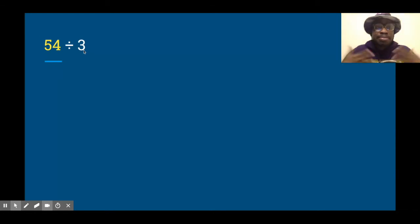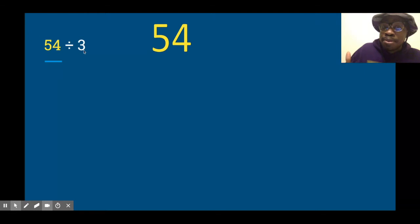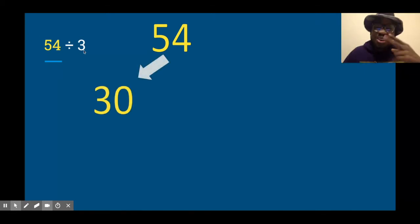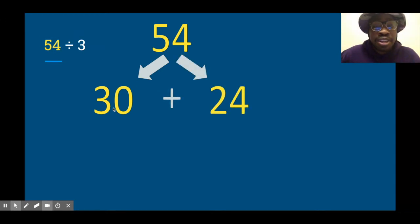Now I pull the 30 out first because I already know I want to divide by this. 30 divided by 3 is 10. Now I had 24 left over, which was perfect because 24 is also divisible by 3.